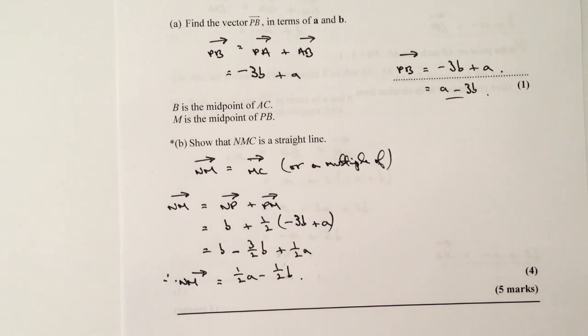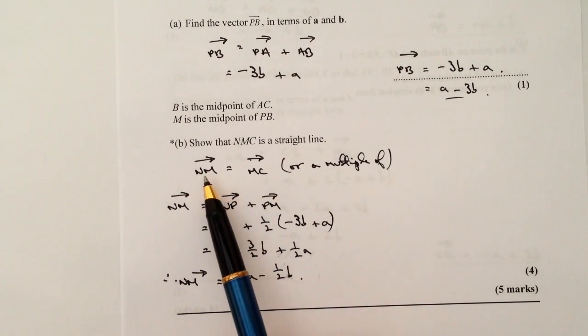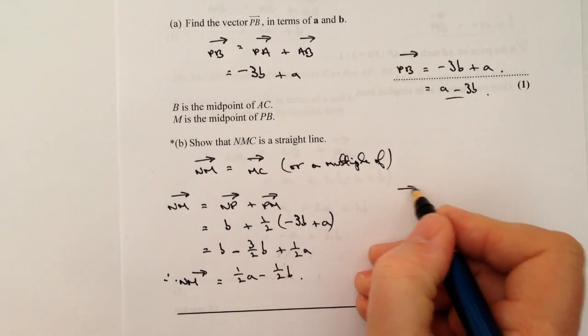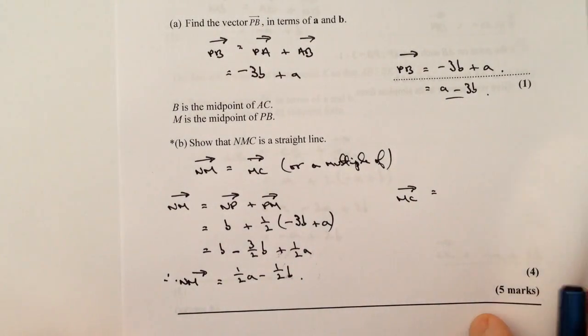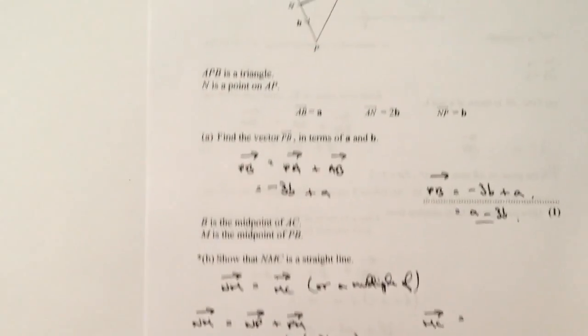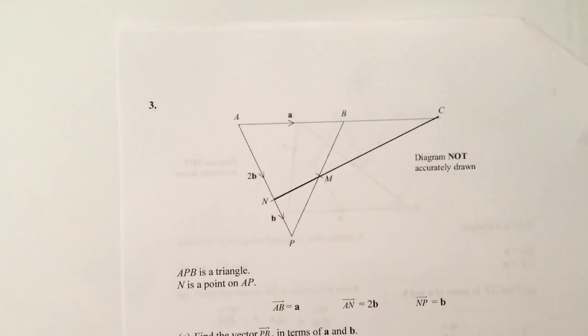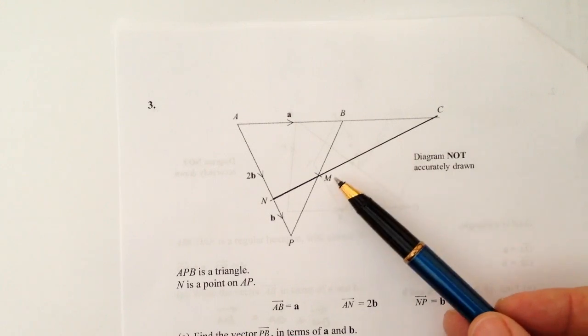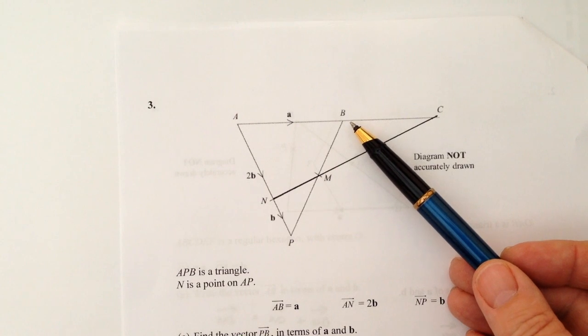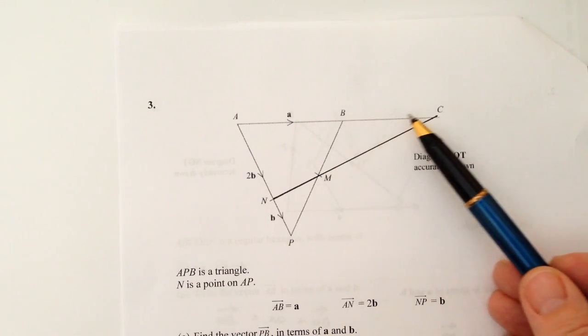So the next little bit is I'm going to look at vector MC, because what I'm suggesting is that it must equal it or a multiple of. So vector MC. And that's going to be, and again, if we look at the diagram, what we need to do is we need to look at this point here. So I'm going to go from M to C. Well, I don't know anything about that vector, but I do know I can go from M to B, because I know that, and I can go from B to C.